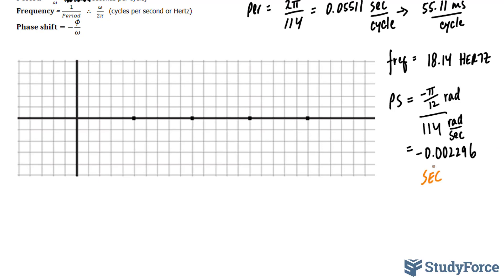And since this number is small, we can represent this in milliseconds by multiplying this whole number by 1,000, giving us negative 2.29 milliseconds.